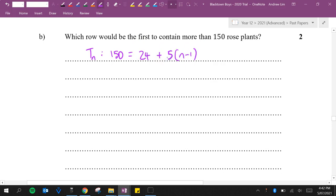So 150 is equal to A plus N minus 1 D, which is 5. So now it's a normal equation for us to solve. 126 is equal to 5N minus 5. 131 is equal to 5N. So N is equal to 26.2. Therefore, the row that would contain more than 150 rose plants has to be in the 27th row.